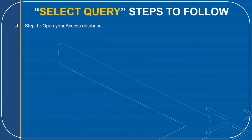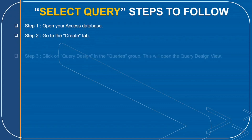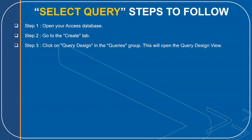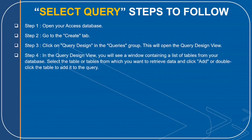Step 1: Open your Access database. Step 2: Go to the Create tab. Step 3: Click on Query Design in the Queries group — this will open the Query Design View. Step 4: In the Query Design View, you will see a window containing a list of tables from your database. Select the table or tables from which you want to retrieve data and click Add, or double-click the table to add it to the query.